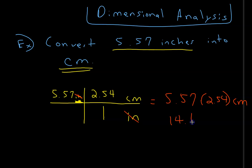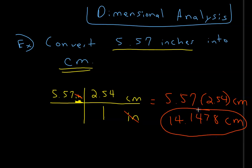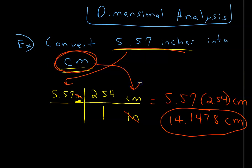That gives you 5.57 times 2.54 centimeters, and the answer is 14.1478 centimeters. So 5.57 inches is about 14 centimeters. Each time, we take the unit we're given, place it here, place the unit we're trying to get to on top, and figure out the conversion numbers.